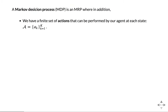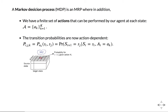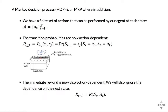A Markov decision process, which is what we actually care about, takes a Markov reward process and adds the fact that you have actions you can perform. At each state we can perform actions from the action space. The transition probabilities are now action-dependent: if you perform an action, it doesn't deterministically determine what state you end up in — you still have a probability distribution, but now it's dependent on the action. The immediate reward is the reward you get if you are at state s_t and perform a specific action a.